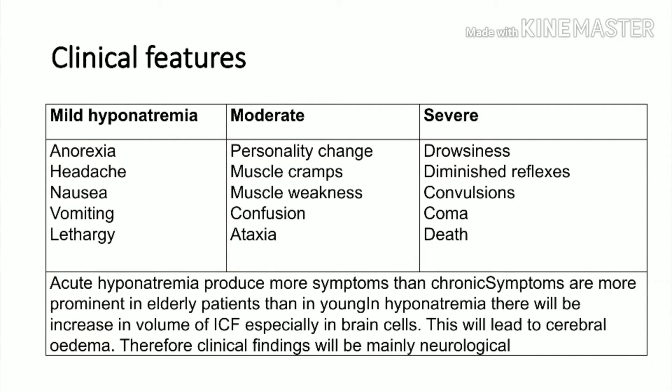Hyponatremia mainly affects brain cells. Mild hyponatremia presents with anorexia, headache, nausea, vomiting, and lethargy. Moderate hyponatremia produces personality changes, muscle cramps, muscle weakness, confusion, and ataxia. Severe hyponatremia causes drowsiness, diminished reflexes, convulsions, coma, and death.